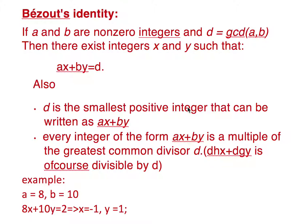Also, d is the smallest positive integer that can be written as ax plus by, and every integer of the form ax plus by is a multiple of the greatest common divisor d.